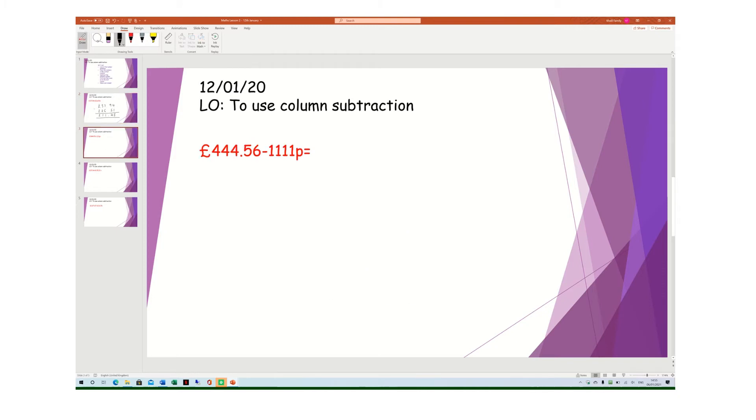This is the second one, your second example. And here it says £444.56 take away 1,111p. This is where I have to be a little bit smart and I have to use my knowledge from what we learned previously in money, in possibly year one, year two, and year three.